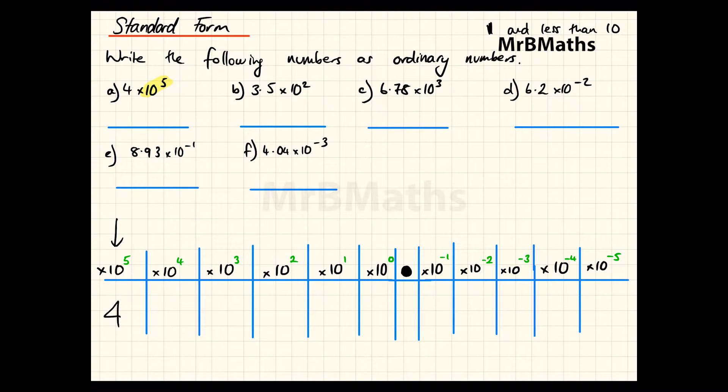I then need to write the number that I'm being told, which happens to be four. Because I've put the four under the ten to the five, I've matched the position. I then need to fill in the remaining columns with zeros. If I look at that number from the decimal point, that's where I stop. This number is four hundred thousand, and that's a standard form number changed into an ordinary number.